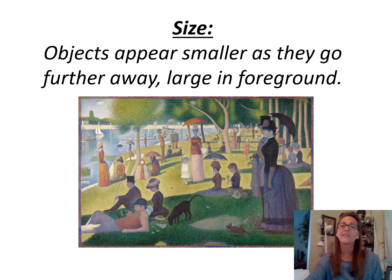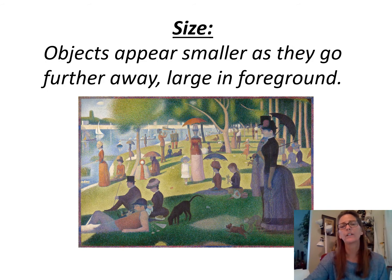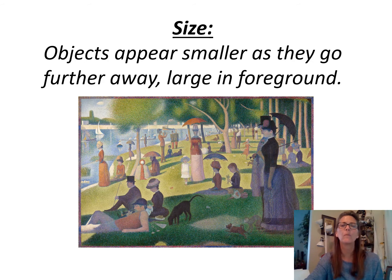Then you have size variation, where you have things going from larger to smaller. We've already talked about this one — you can see larger people in the foreground, then medium-sized people like the lady with the red umbrella, and then all the way in the back things get smaller and smaller. So that's size variation.